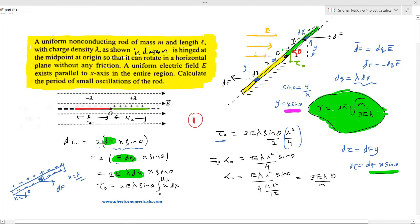What is moment of inertia? τ₀ should equal I₀ times α₀. What is I₀? Moment of inertia of the rod about the midpoint. So α₀ equals (e λ l² sin θ)/4 times - what is the moment of inertia of the rod about its center? For a rod of mass m and length l, it's ml²/12.